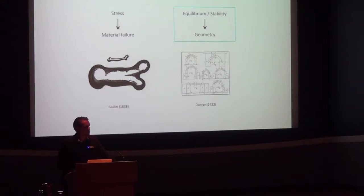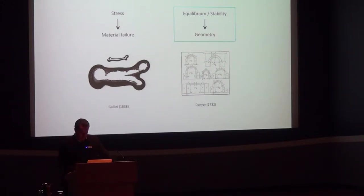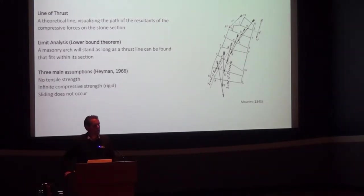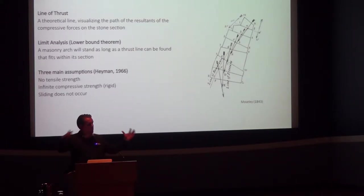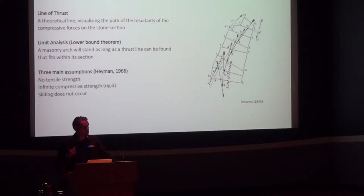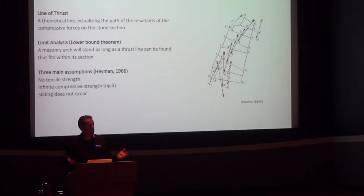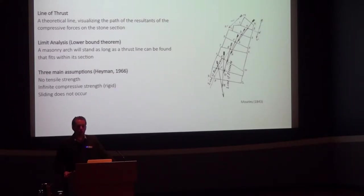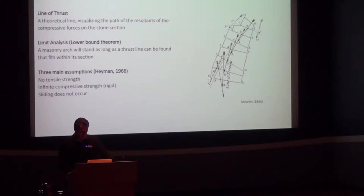The master builders also used physical models — wooden or other types — to explore the stability of these structures. We now have a theoretical framework to explain the stability of unreinforced masonry, specifically the idea of a thrust line. Heyman at the University of Cambridge translated this within the limit analysis framework: you need to find one possible solution that stays on the inside of your section, and that is sufficient to say the structure is stable. This is very powerful, especially for structures where you have no idea of material qualities, stiffness distribution, or exact boundary conditions.